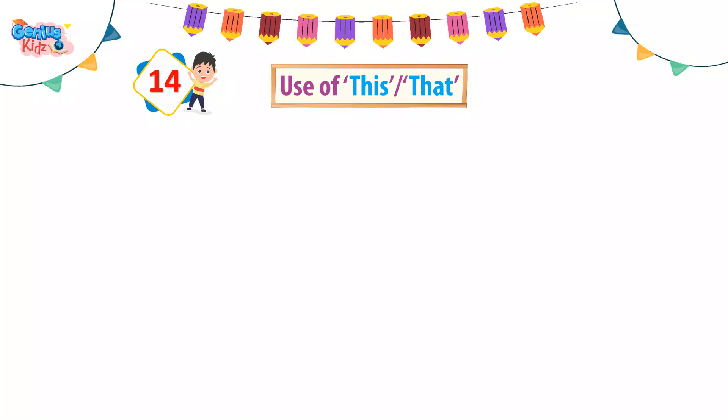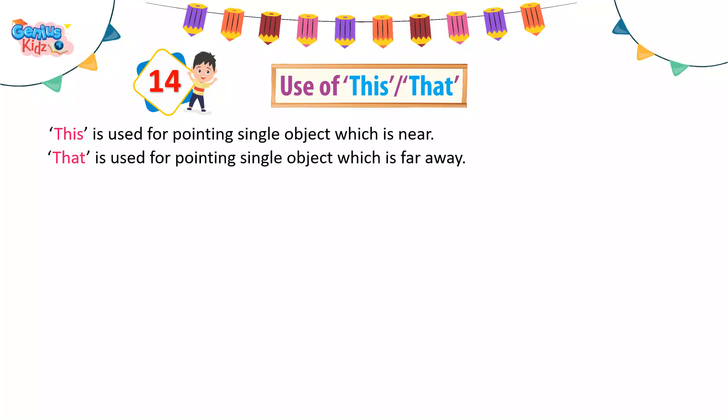Use of 'this' and 'that'. 'This' is used for pointing to a single object which is near. 'That' is used for pointing to a single object which is far away.